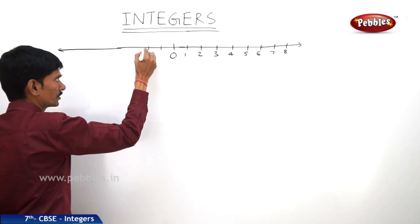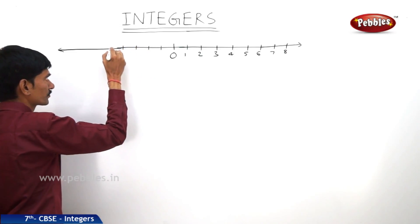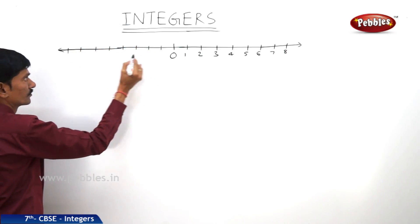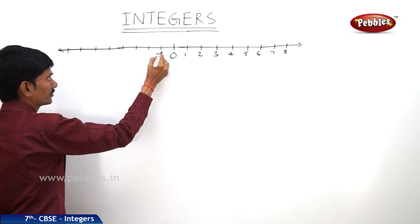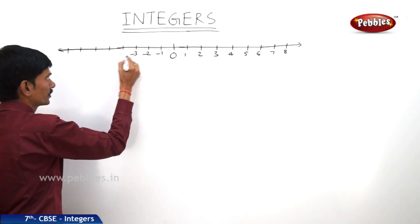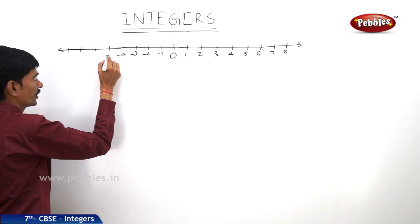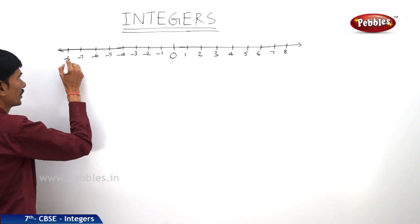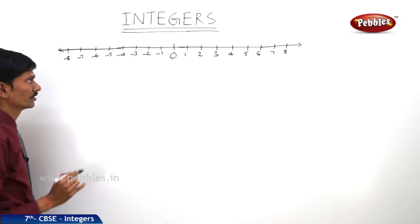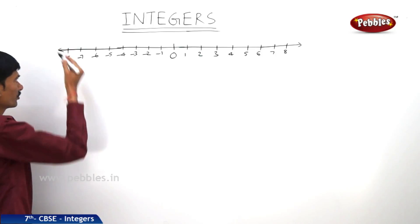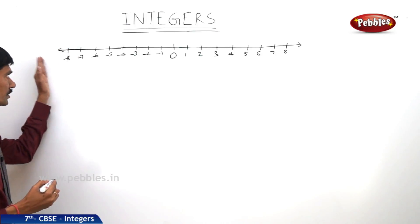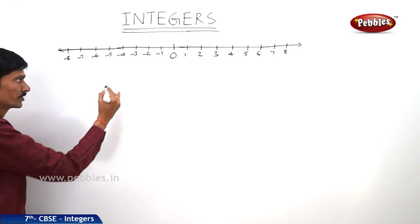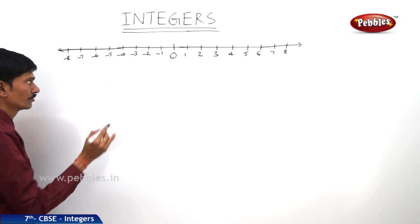We represent the negative integers to the left of 0: minus 1, minus 2, minus 3, minus 4, minus 5, minus 6, minus 7, minus 8 and so on. The arrow mark represents there are indefinitely many negative integers to the left of 0.